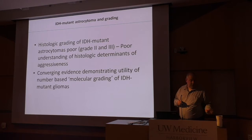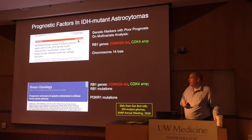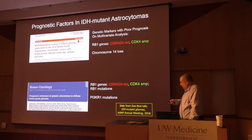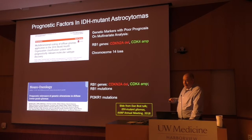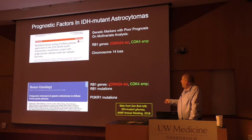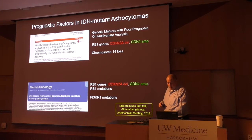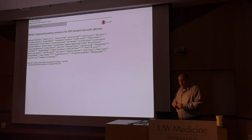This slide from Dan Bratt at our national neuropath meeting puts our work in context with another study from Japan. Going back to those prognostic groups of IDH mutant astrocytomas, we defined bad actors as CDK4 amplified, or CDKN2A homozygous deletion, or chromosome 14 loss. The Japanese group had something similar, overlapping with CDKN2A deletion and CDK4 amplification as poor prognostic markers. Then a group out of Heidelberg using methylation profiling proposed an improved grading system for IDH mutant astrocytomas.